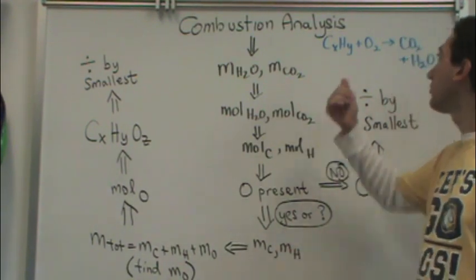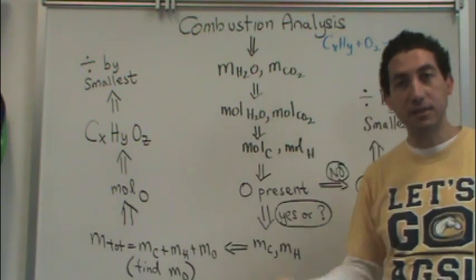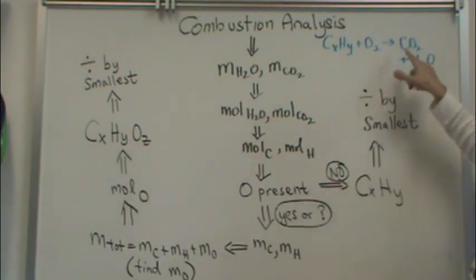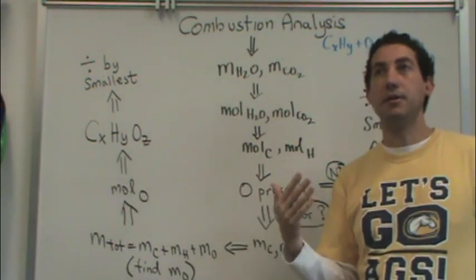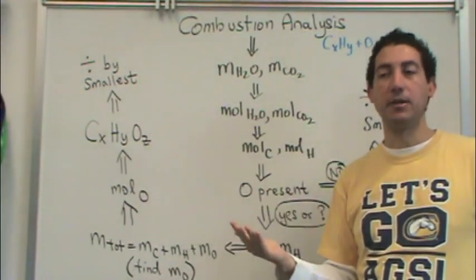So you can run this through a combustion analysis. And with an absorbent, you can measure the mass of CO2 and H2O that comes off of that. Now I want to know the empirical formula and the molecular formula.